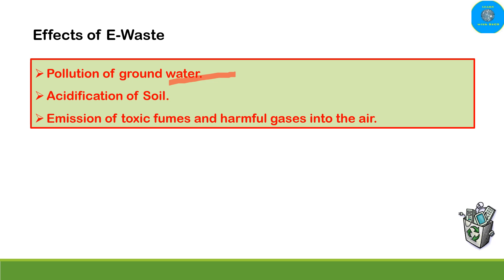Similarly, acidification of soil occurs as chemicals are released into the soil, leading to soil pollution. The third and important effect is the emission of toxic fumes and harmful gases into the air — like mercury, carbon, and lead. These gases are a major environmental concern, as they damage the atmosphere.